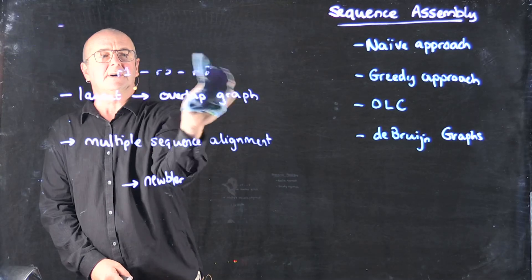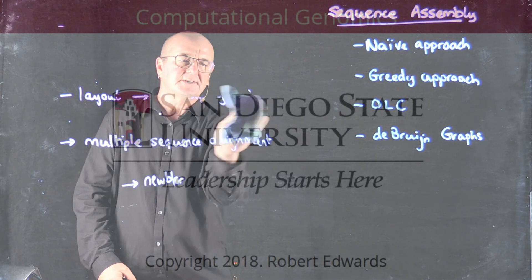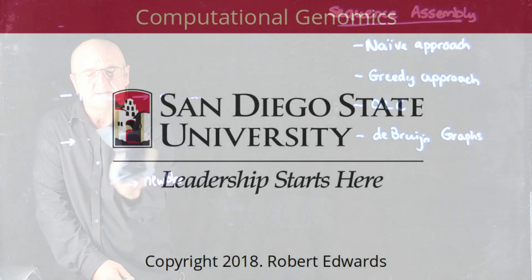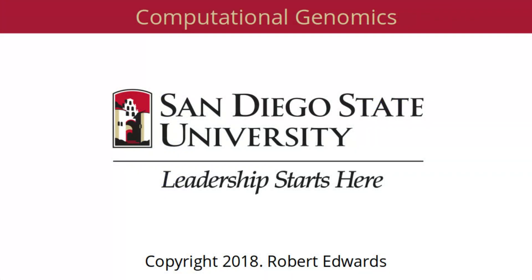And so the last approach that we're using for sequence assembly is called a de Bruijn graph, and that's really where most of the modern DNA sequence assembly algorithms have ended up focusing, kind of around the de Bruijn graph approach.